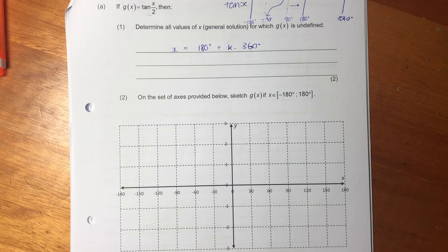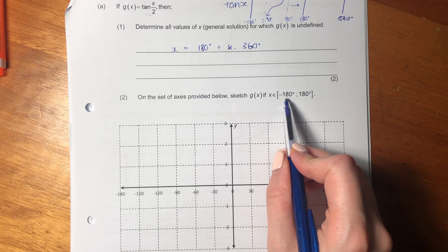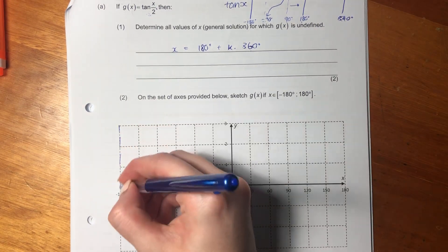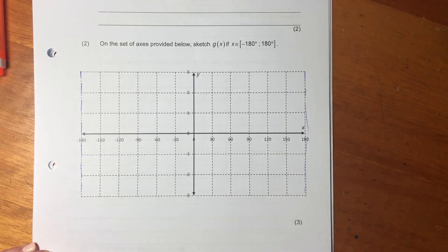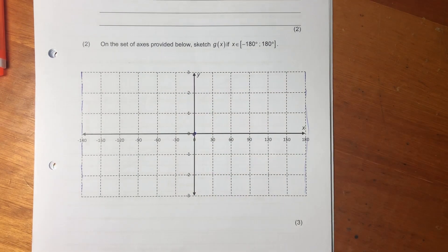Now it says, on the set of axes provided, sketch g of x if x is element of negative 180 and 180. So we know that this side of the graph is going to be an asymptote and that side of the graph is also going to be an asymptote. And we know that it's going to go through there.